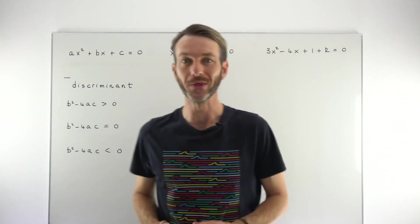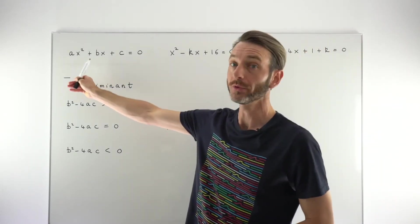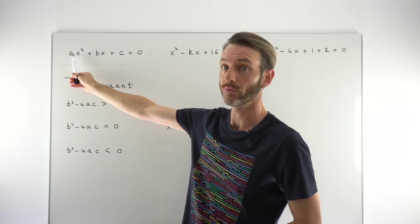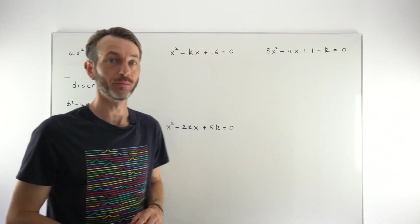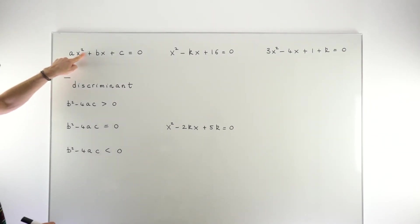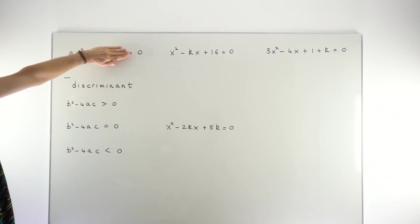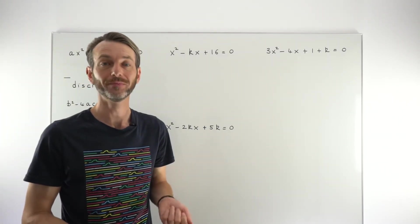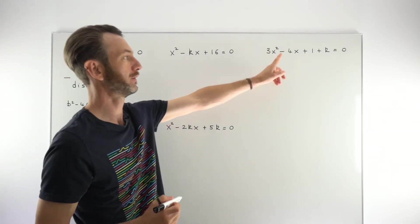Let's start with the theory. A general quadratic equation looks like ax² + bx + c = 0, where a, b, and c are real numbers and the a value must be non-zero. The x term and the constant term can disappear, but you must preserve the x² term — that's what defines a quadratic equation.